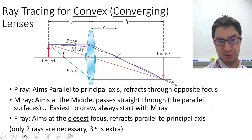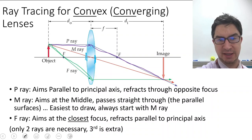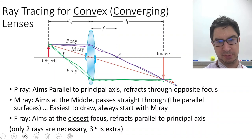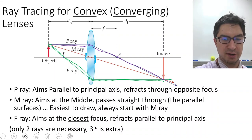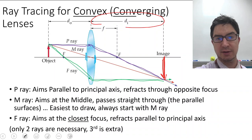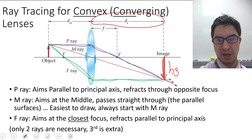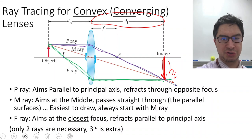The F ray aims at the nearest focus, hits the lens, and refracts such that it is parallel to the principal axis. All three rays converge to form the image. Our goal is to find the image location D sub I and the image height H sub I, based on the magnification and the object height H sub O.